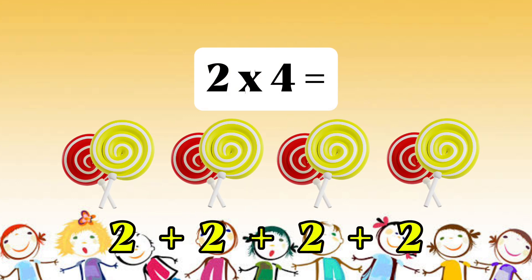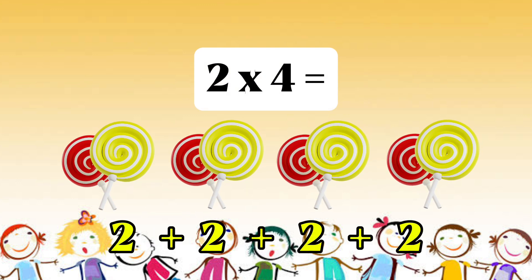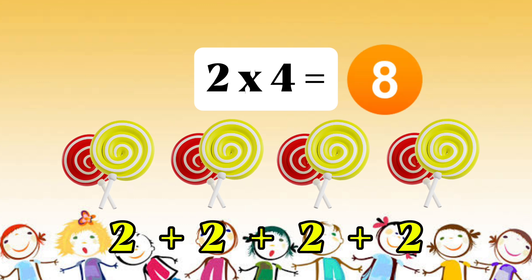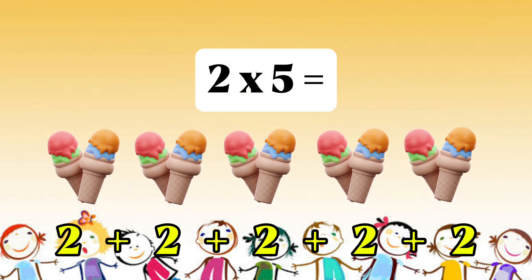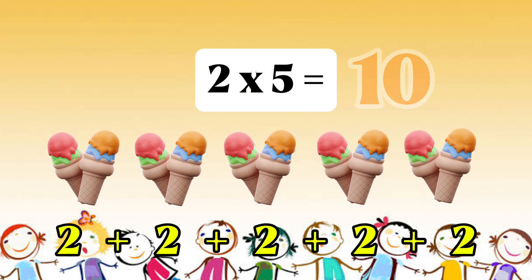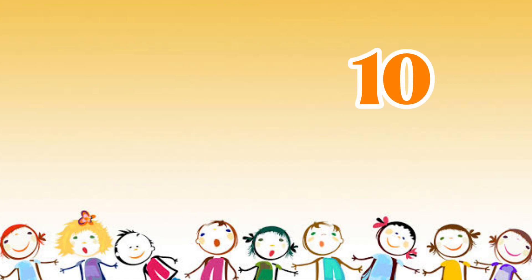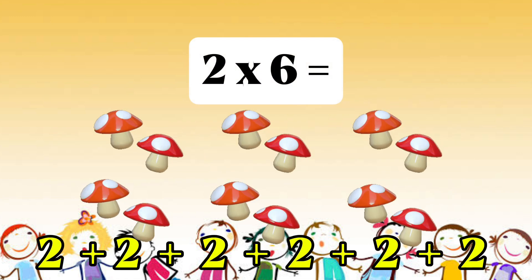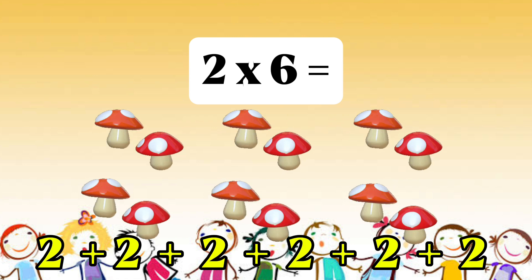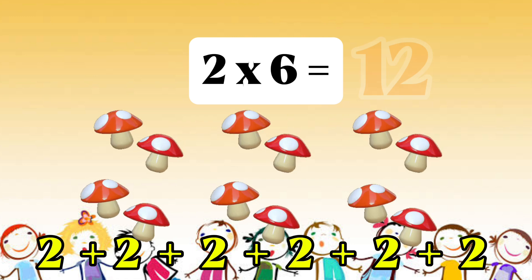2 multiplied by 4, or 2 times 4, equals 8. 2 multiplied by 5, or 2 times 5, equals 10. 2 multiplied by 6, or 2 times 6, equals 12.